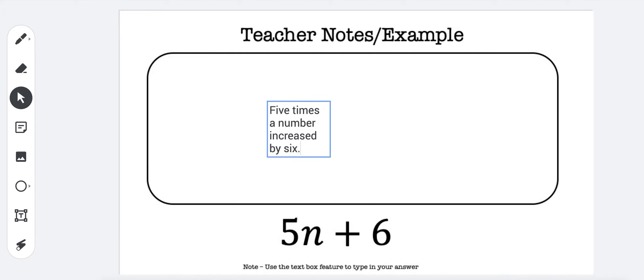Now someone else might say the sum of five times a number and six, and there's actually a bunch of different ways of writing this expression. But anyways, five times a number increased by six is the way I did it, and there's certainly other ways to do it as well.